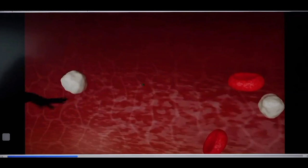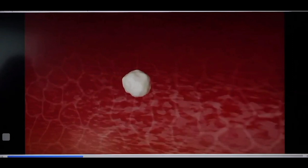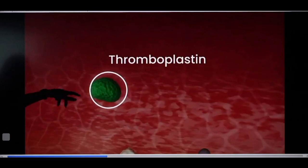First of all, injured tissue secretes thromboplastin. With thromboplastin, you attract your blood platelets, and those blood platelets secrete thromboplastin.